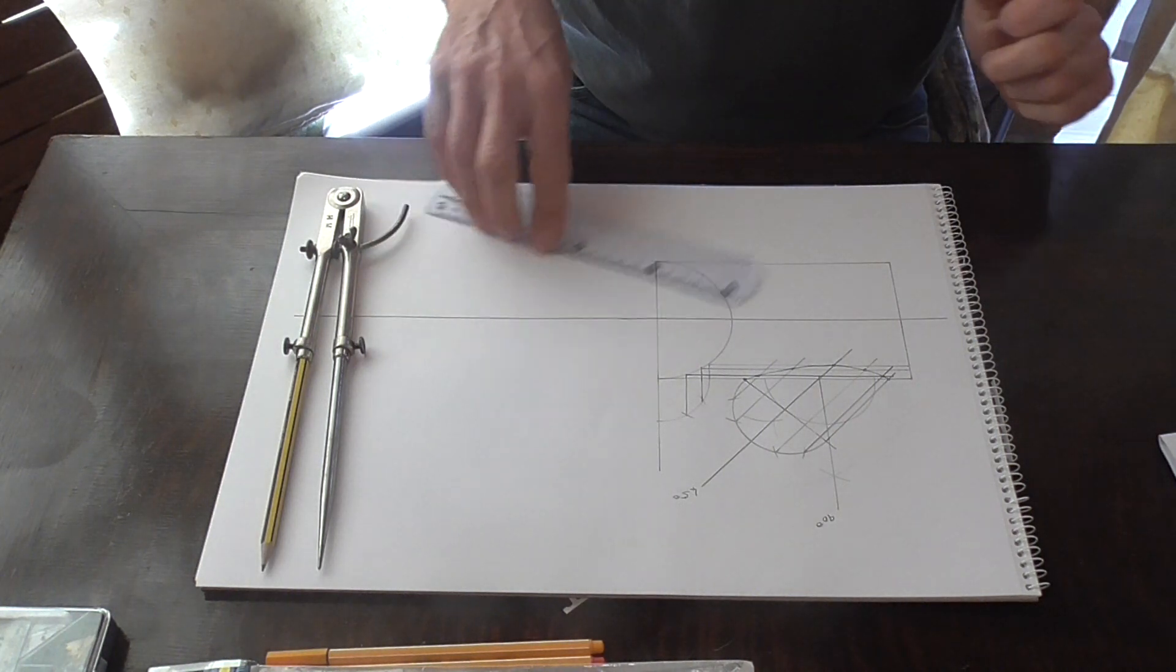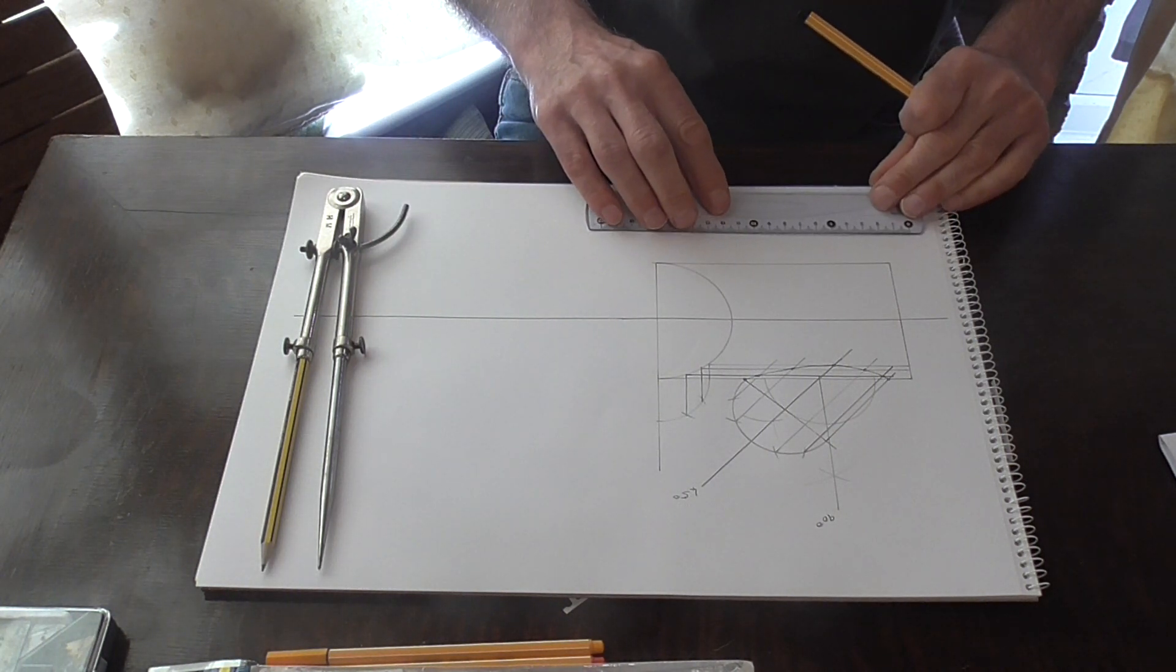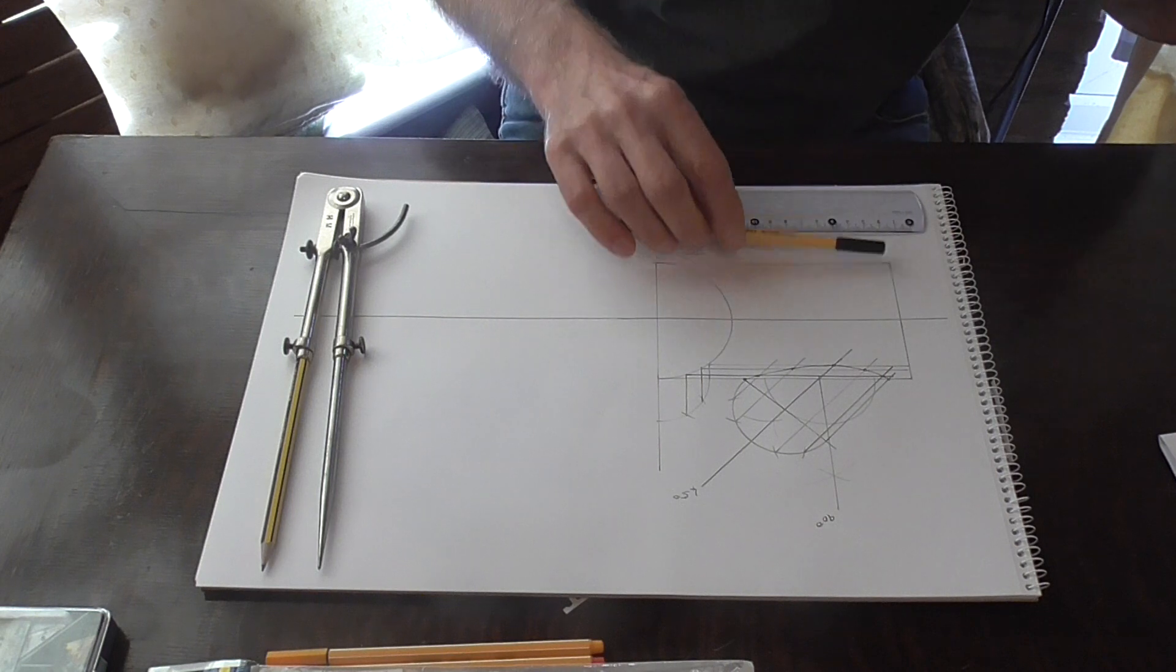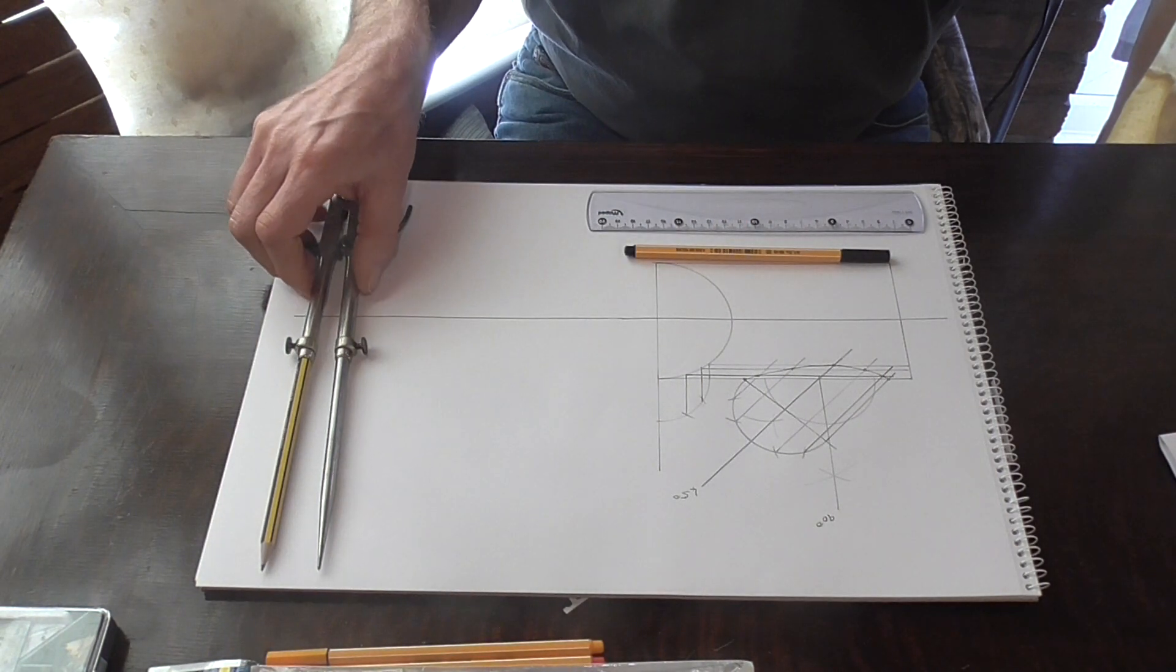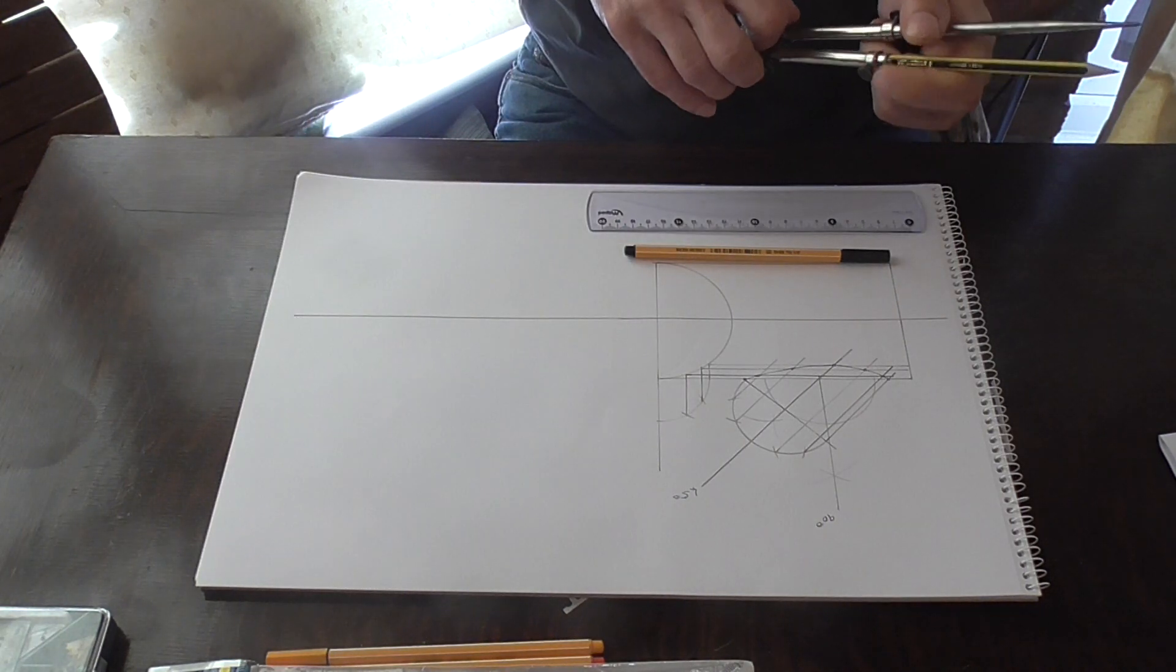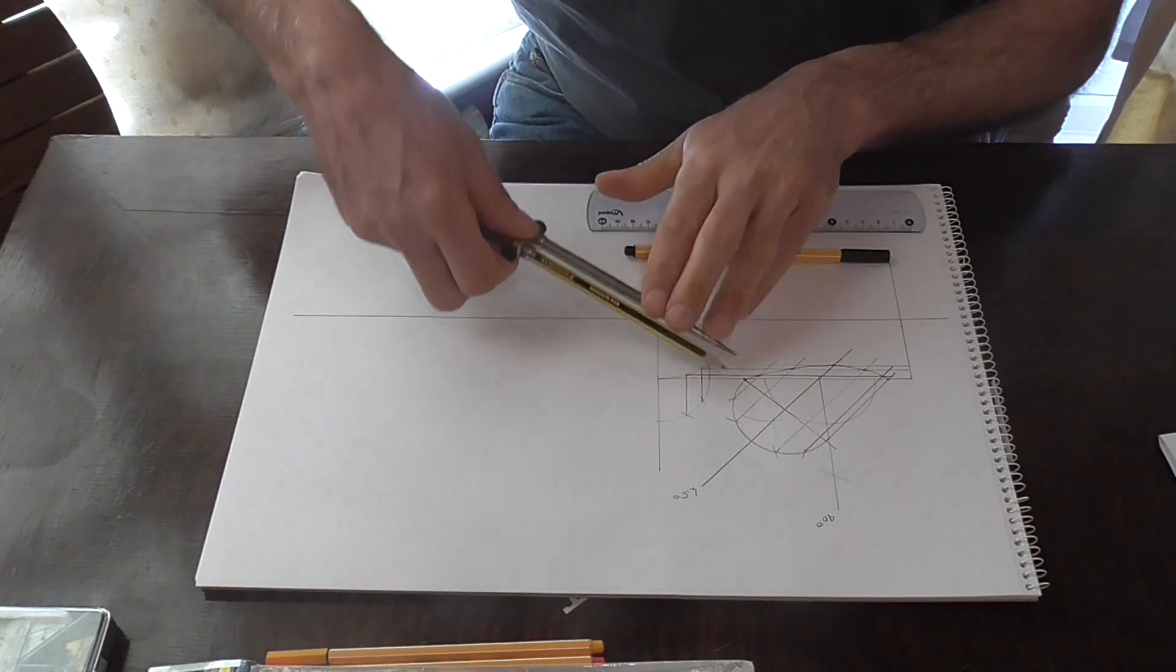And you'll notice that we have a curved line of intersection just there. Now to do a full pattern you need 13 lines of construction and to do a half pattern you would need 7 lines of construction. We're going to do a full pattern today.